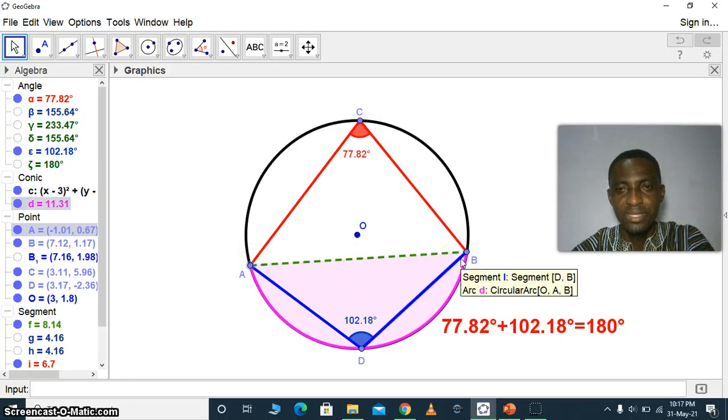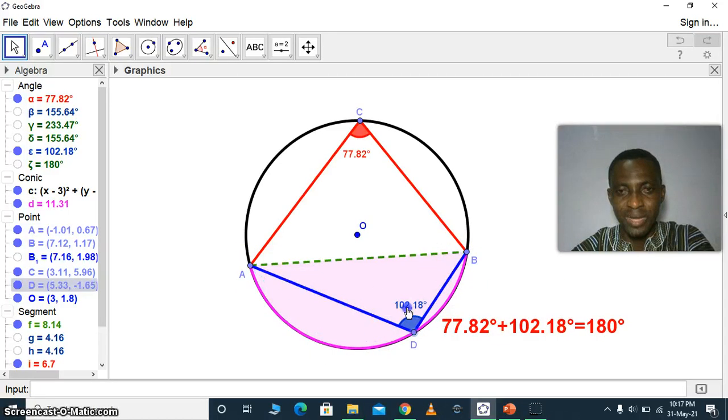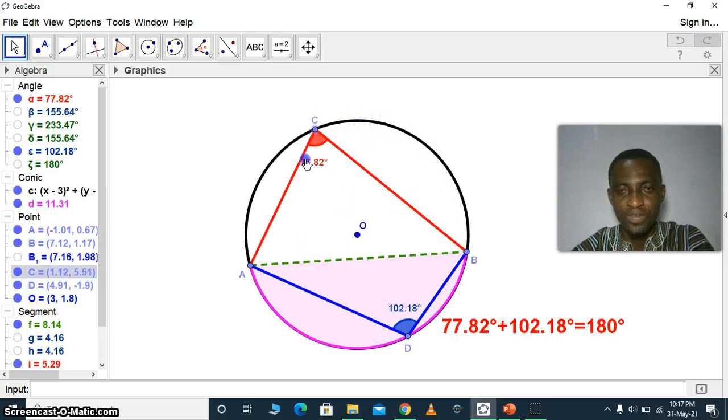We have this angle at one side of the segment and this angle at the opposite side of the segment. And what we are saying is true: if we add the angle 102.18 and 77.82, the result will give you 180 degrees.